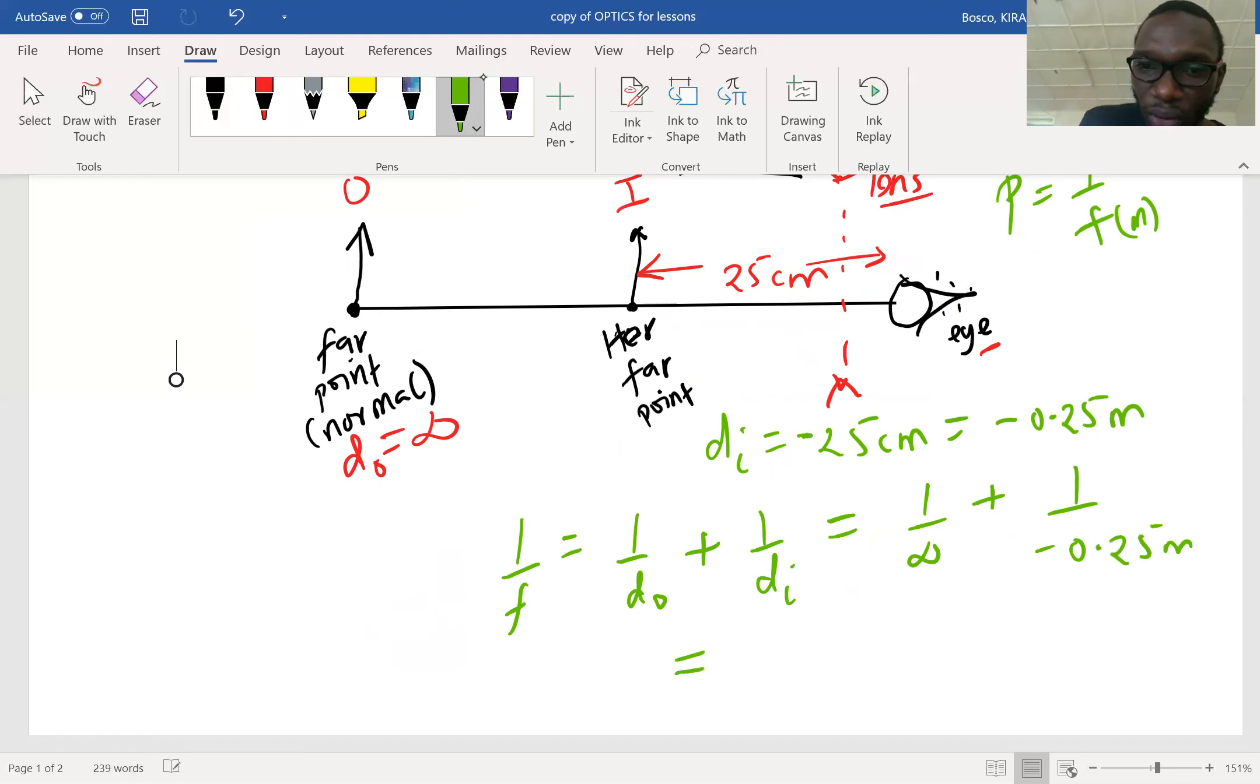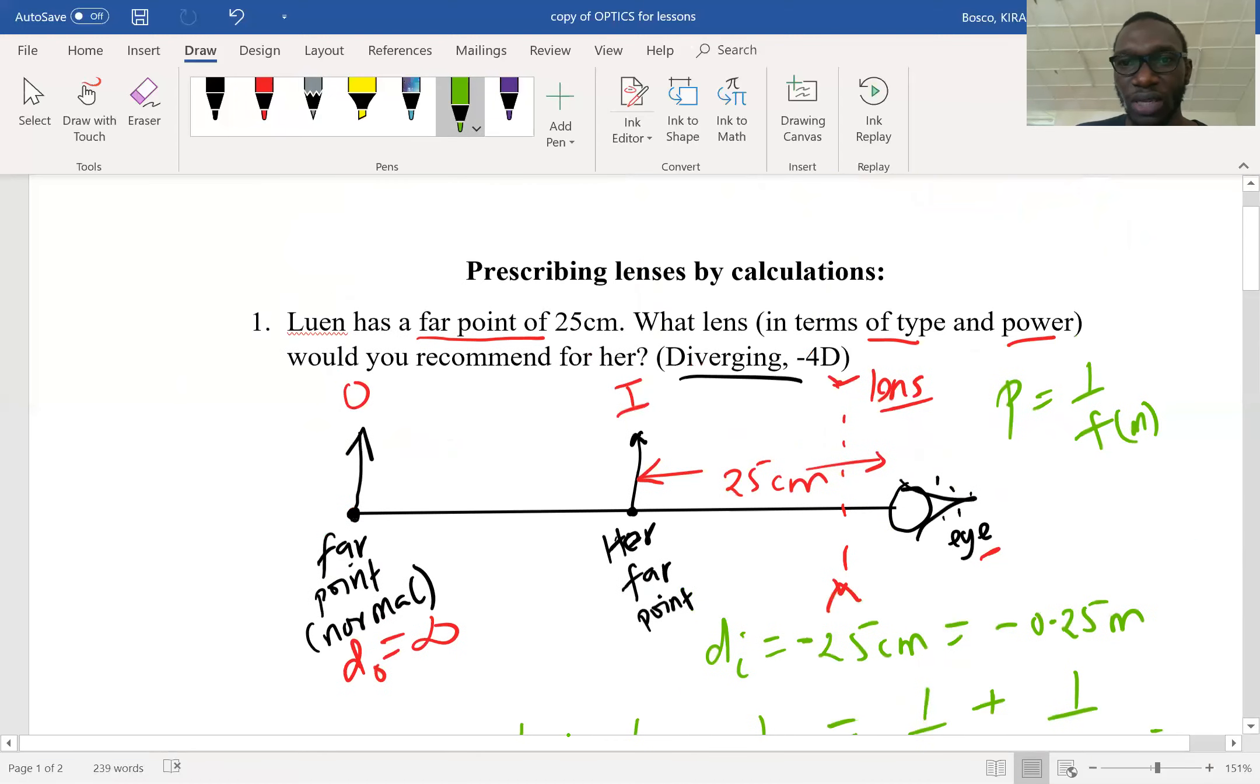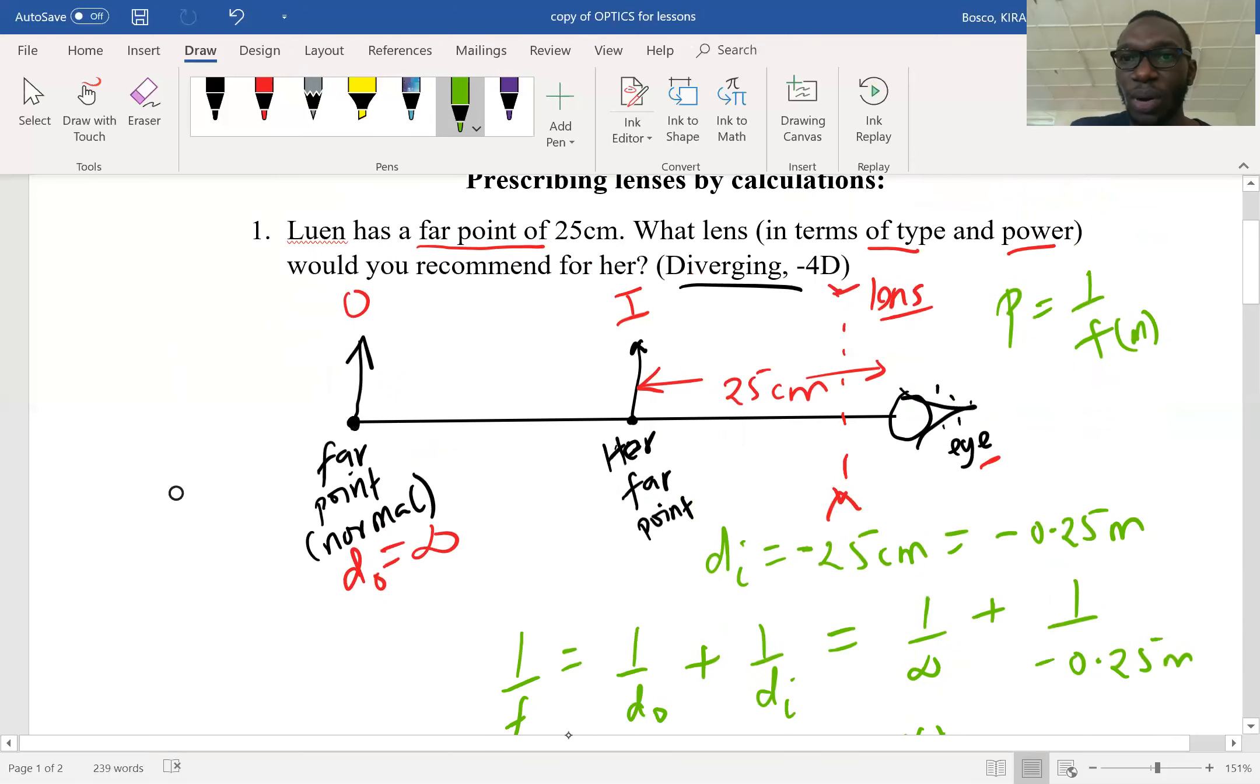And therefore we get 1 over f, which is the same as power, as negative 4 diopters. The final answer being negative means that it's a diverging lens, and I believe we have answered the question. It should be a diverging lens and must have the power of 4 diopters.